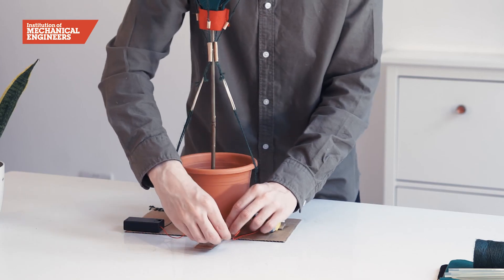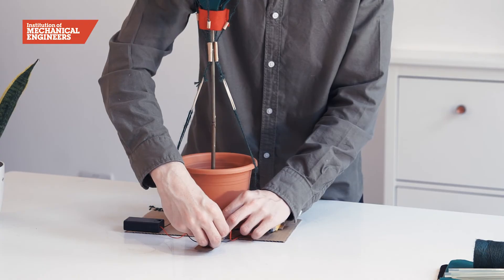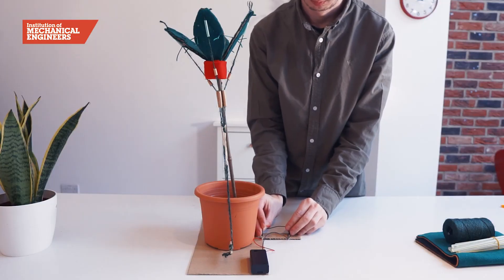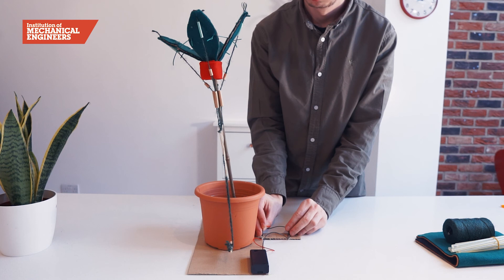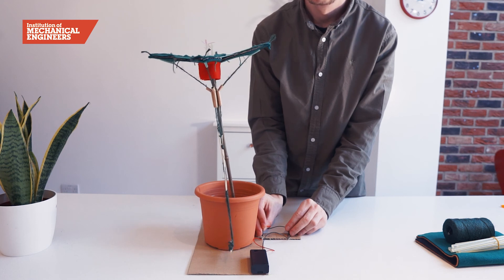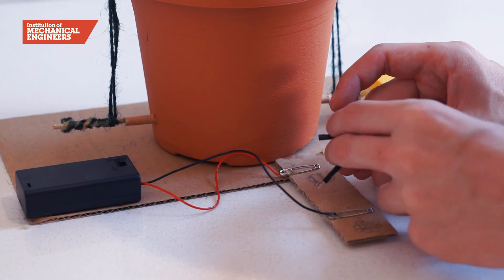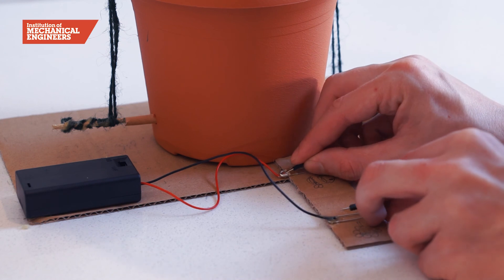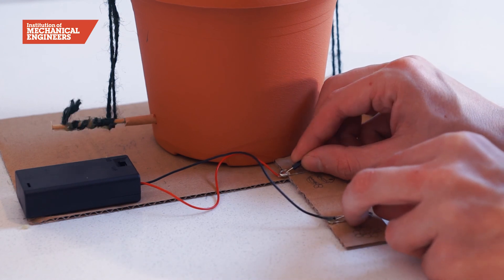When the paper clips make contact with the ends of the motor wires, the circuit will be complete and the winch will start to wind. If the paper clips are removed, the circuit is broken and the winch will stop. To reverse the winding motion, we can flip the switch over to reconnect the circuit with the batteries wired in the opposite direction.